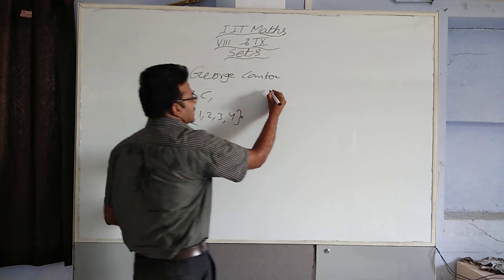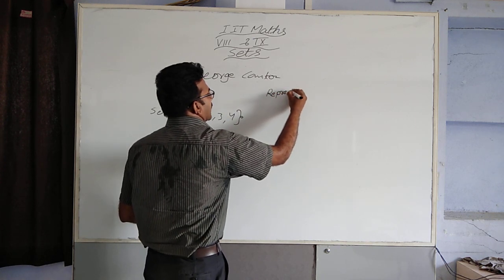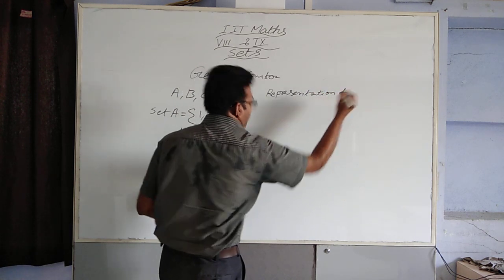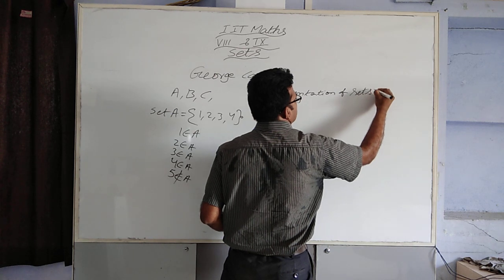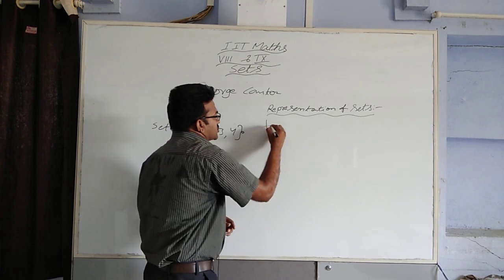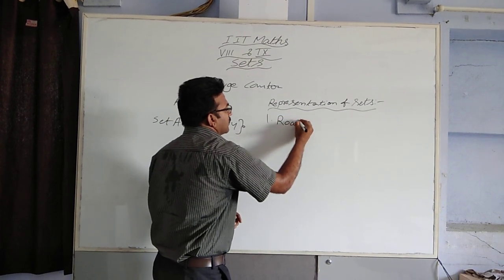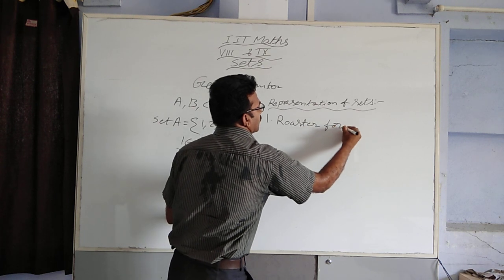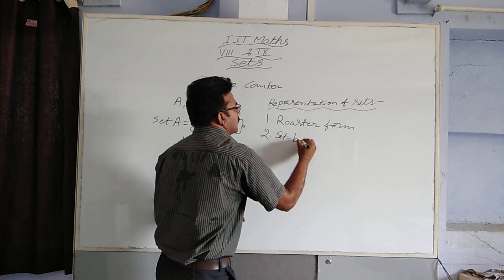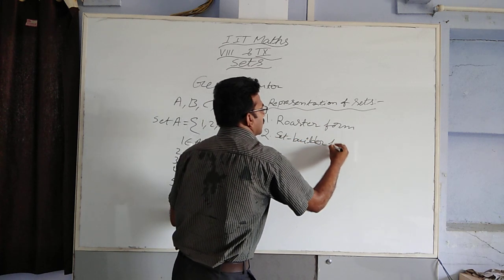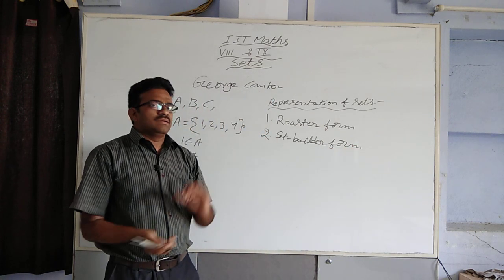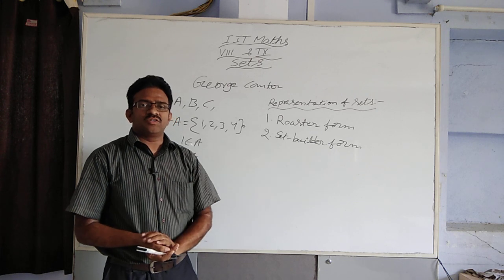Next, representation of sets. Generally, sets are represented in two ways. One is roster form. Second one is set-builder form. In roster form, generally within the curly braces the elements are separated with commas.